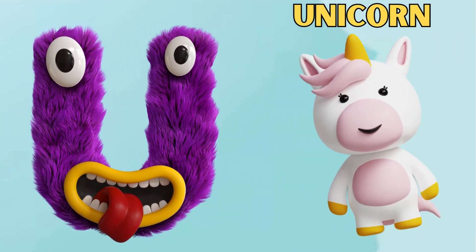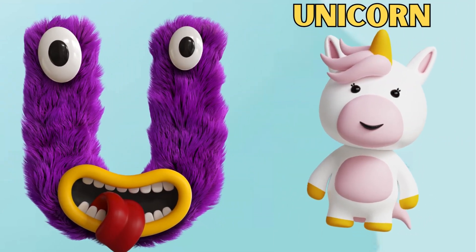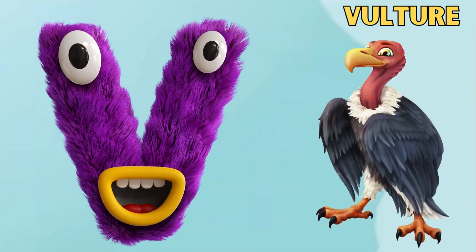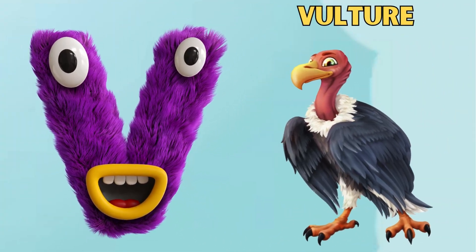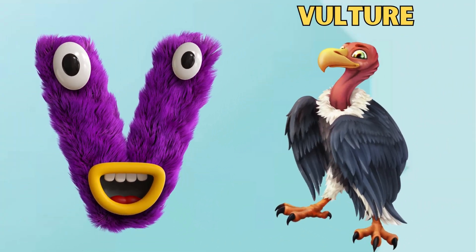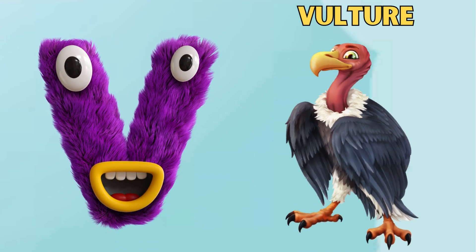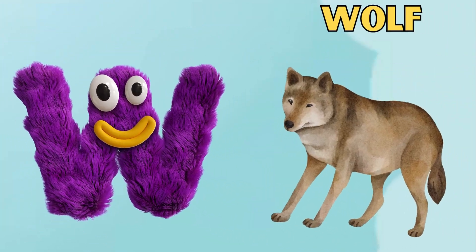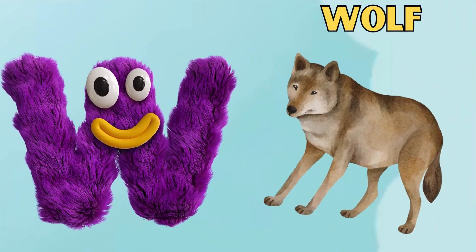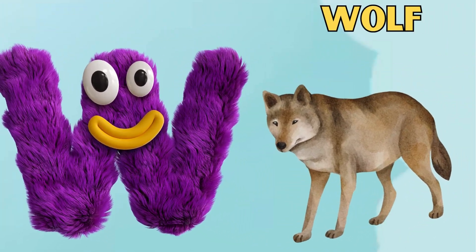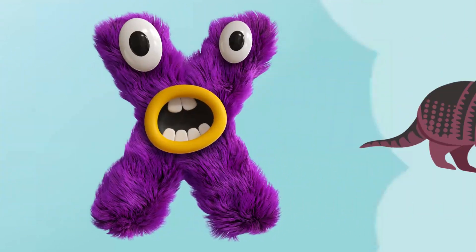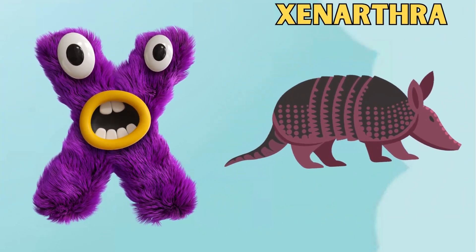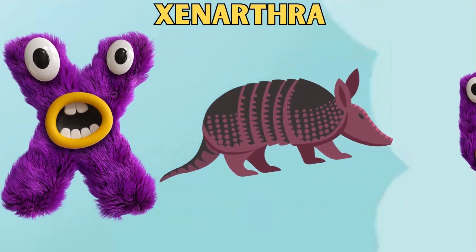U is for Unicorn. U, U. Unicorn. V is for Vulture. V, V. Vulture. W is for Wolf. W, W. Wolf. X is for Xenarthra. Z. Xenarthra.